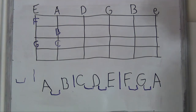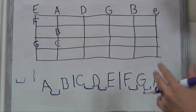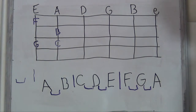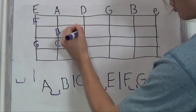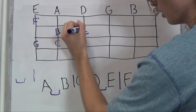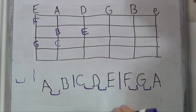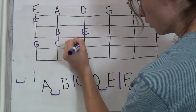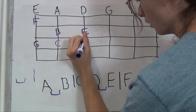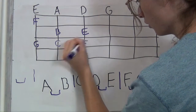So C to D, and now D to E. D to E is another whole step — one, two — and we're on the second fret there. E to F: we've already seen that before on the low E string. This is another half step, so we've got F right there.